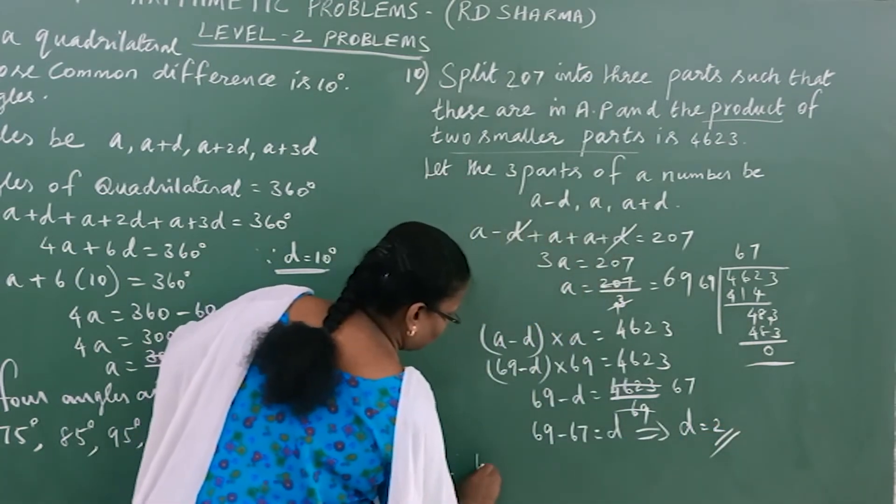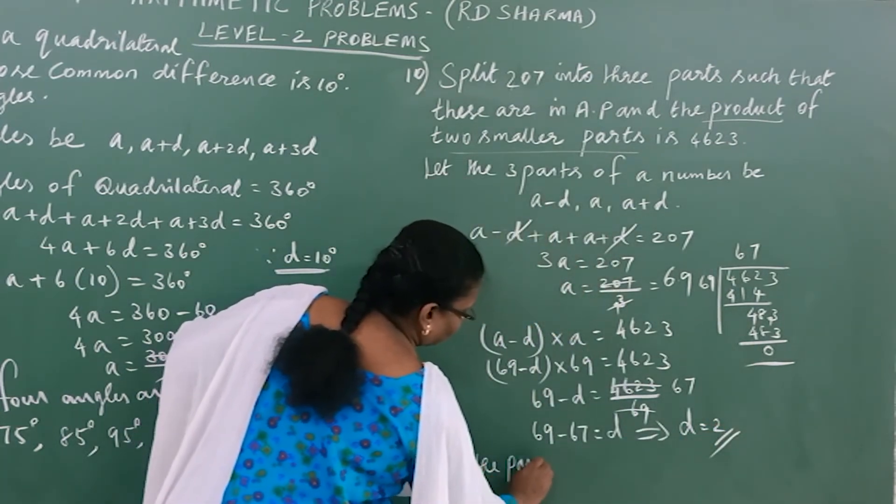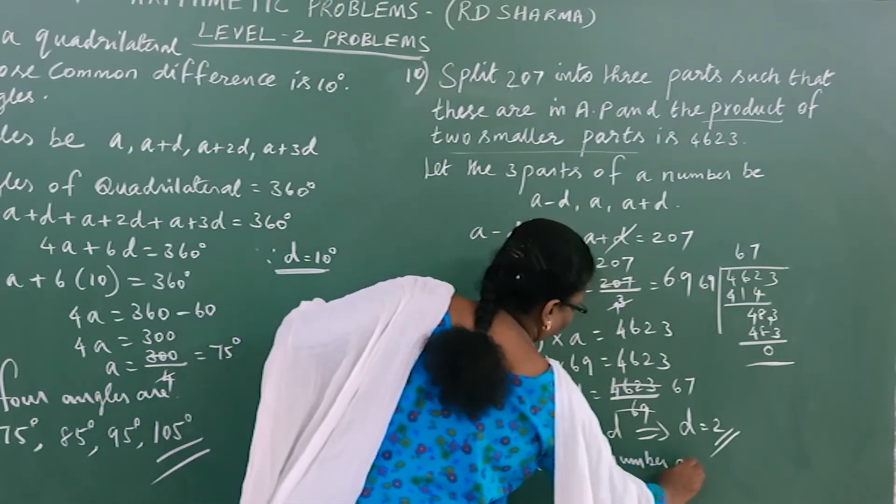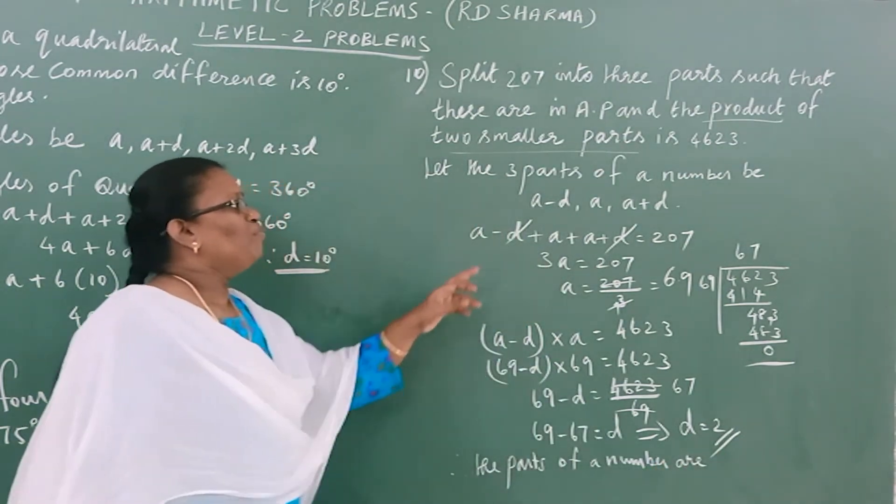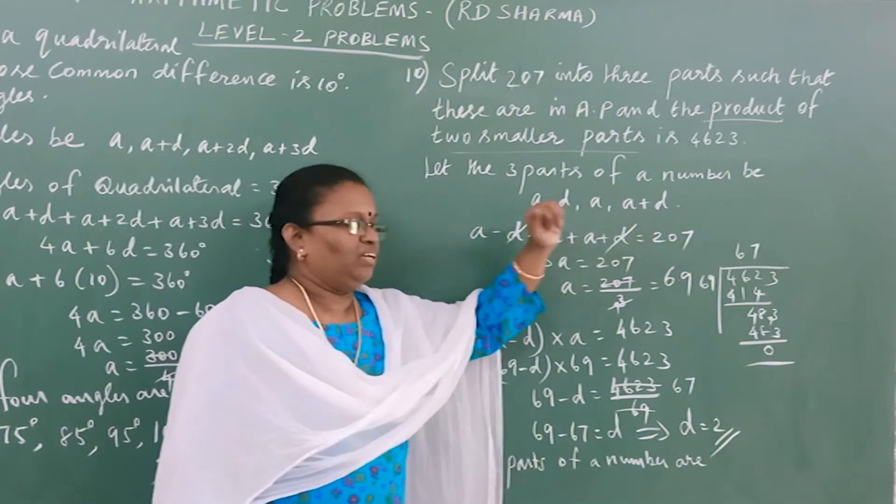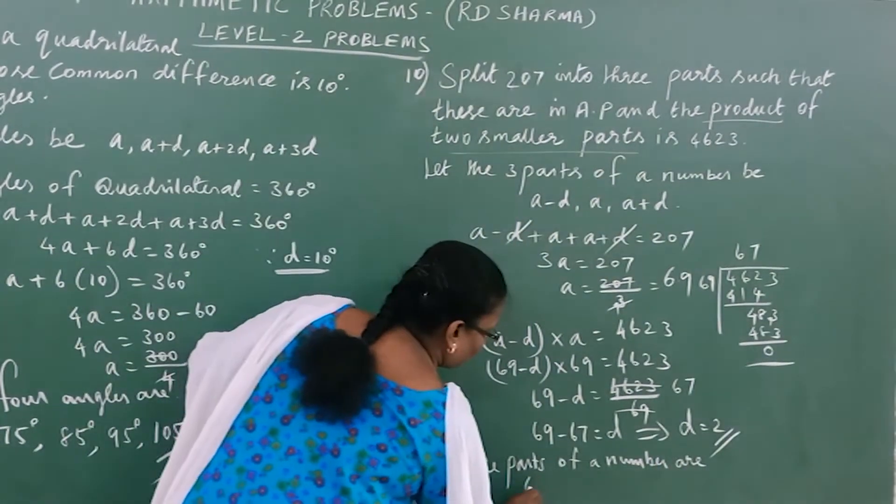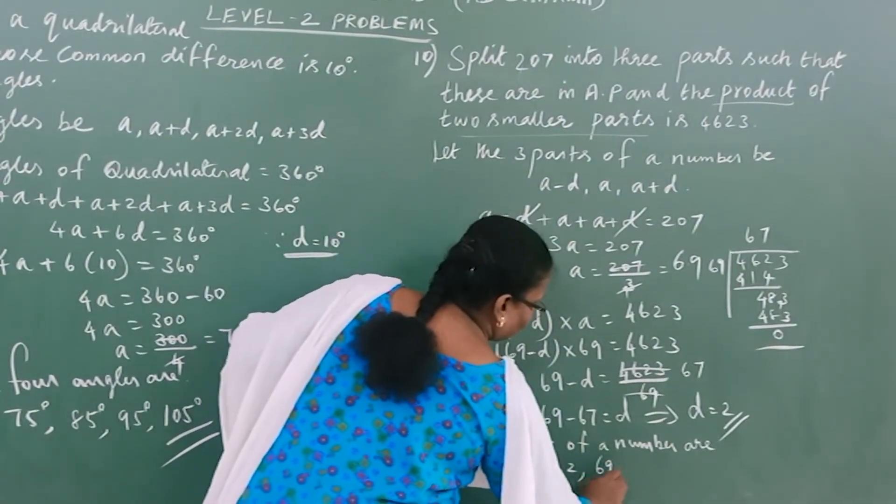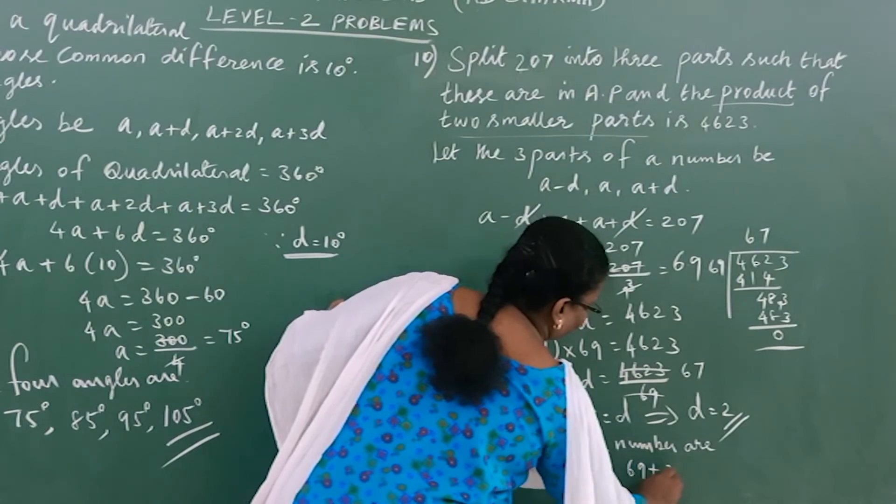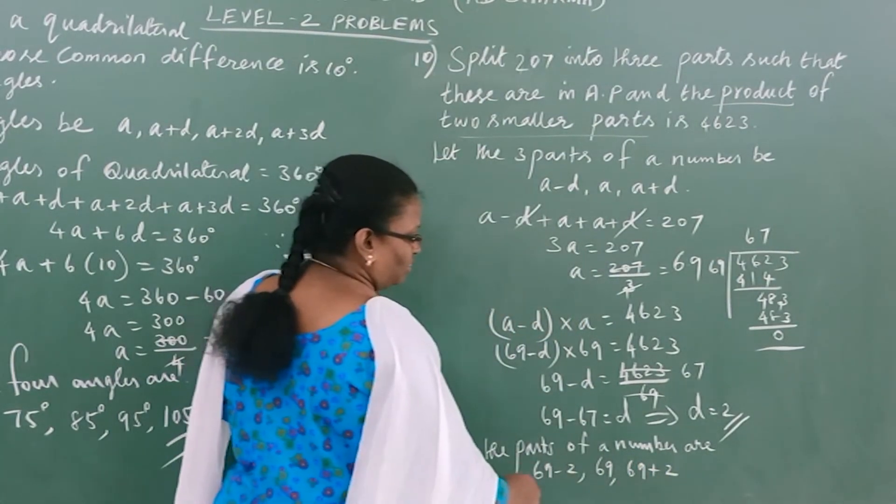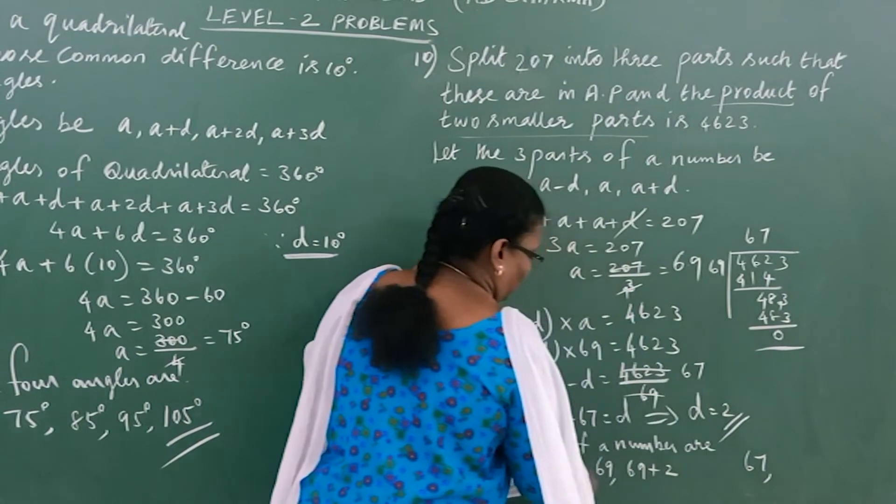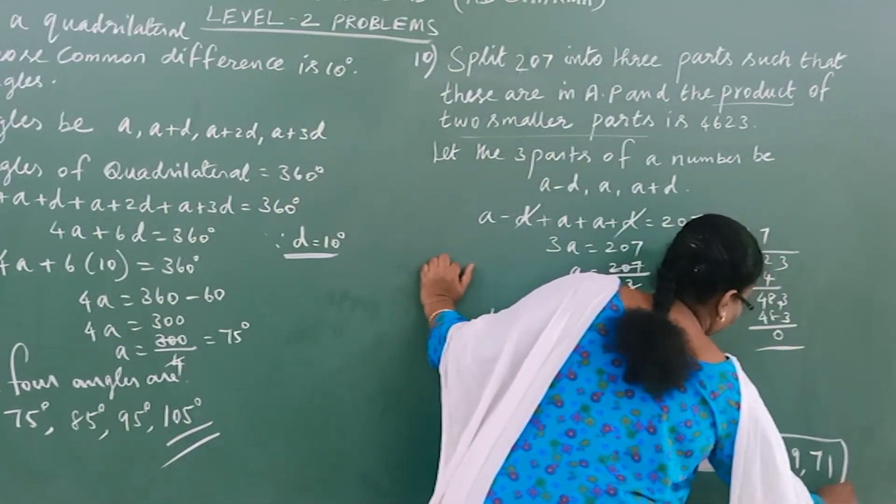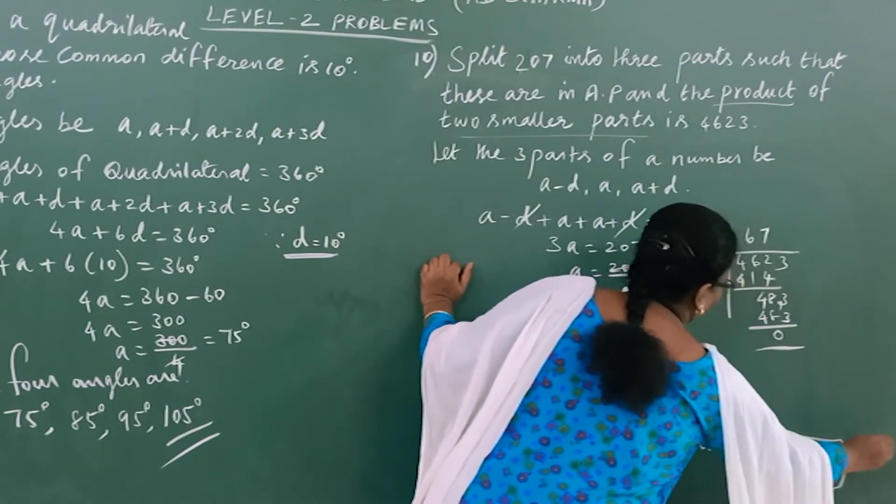Therefore the parts of the number are A-D, A, and A+D: 69-2, 69, and 69+2. Your answer is 67, 69, and 71.